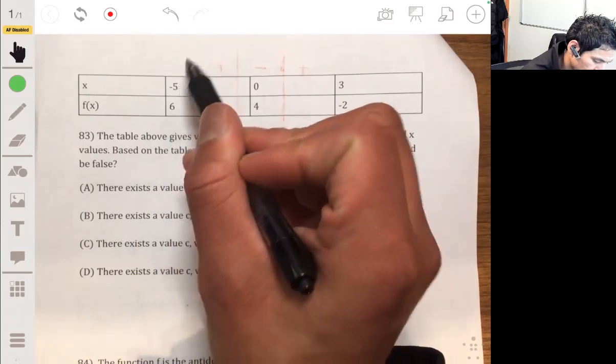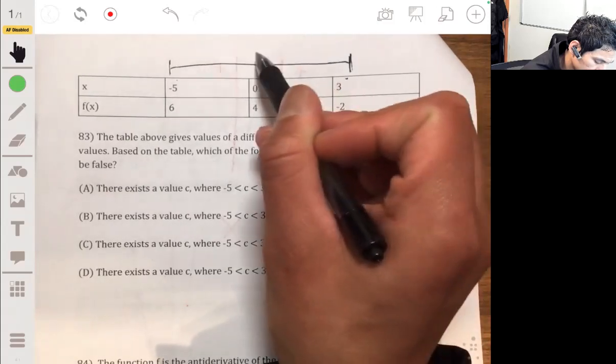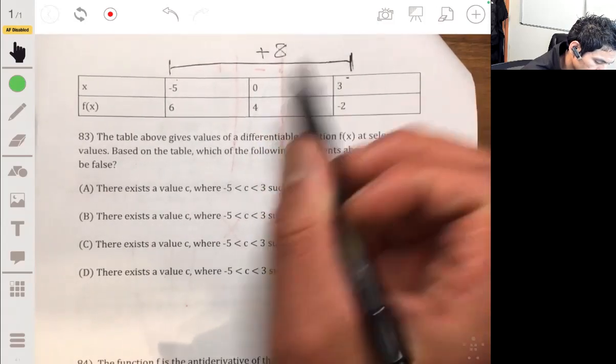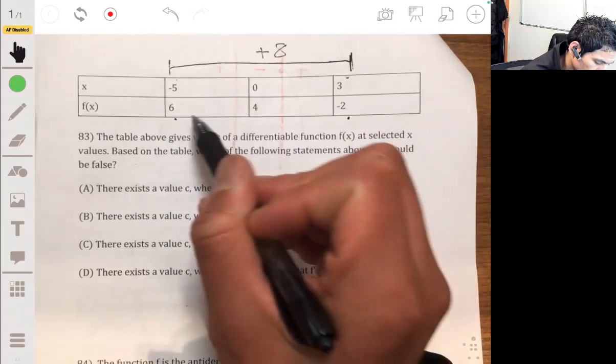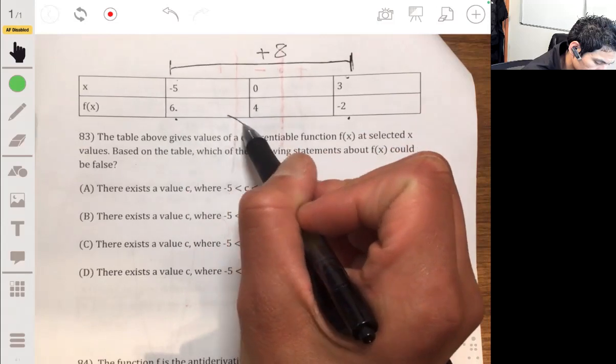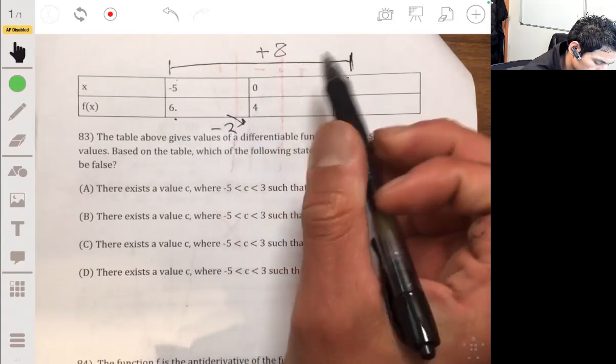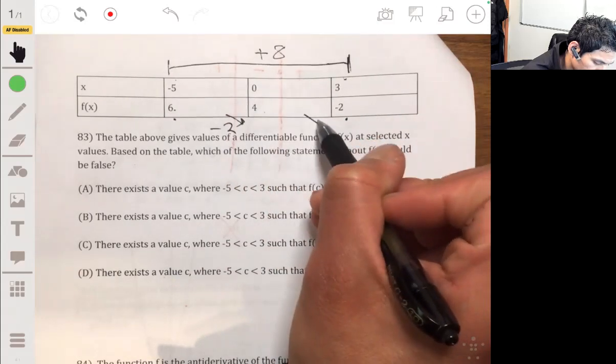Let's see what's going on in general. We're going from x equals negative five to three, so we're increasing our x values by eight. Then we go from six to negative two, but we go from first to six to four, so we go down by two, and then we go from four to negative two, so we go down by six.